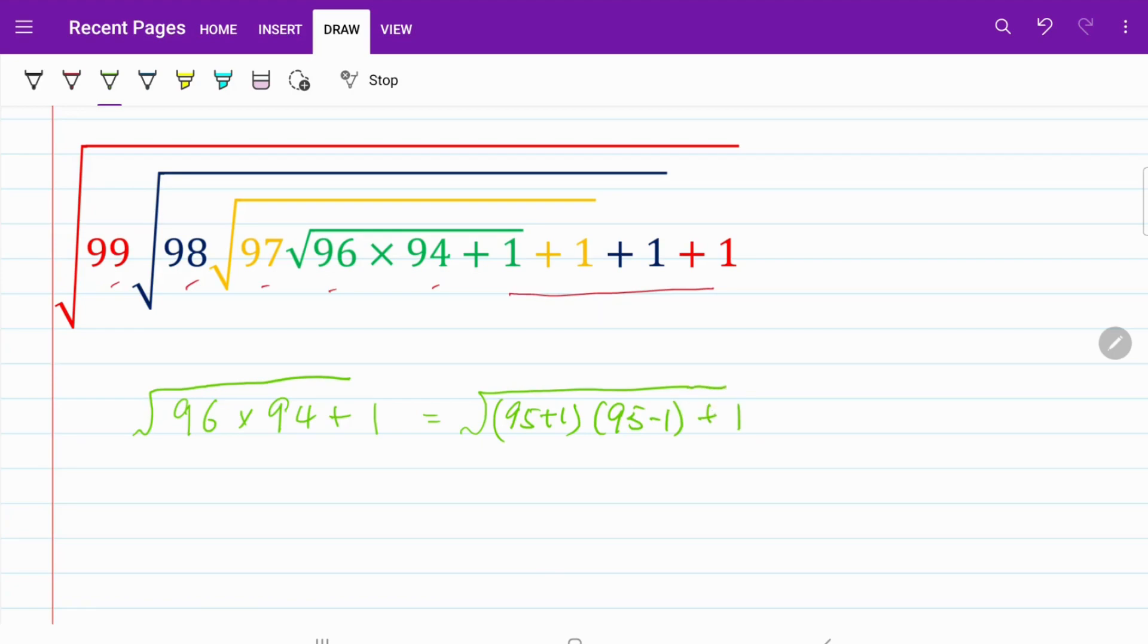So if we look at this part right here, I can make use of the formula of a plus b multiplied by a minus b, which is equal to a squared minus b squared. In other words, I can rewrite this expression as 95 squared minus 1 squared plus 1, and the whole thing is contained within the green color square root.